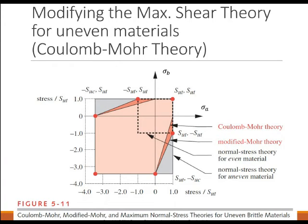Taking the maximum shear theory and the maximum normal theory and combining them is what Coulomb and Mohr did — it's called the Coulomb-Mohr theory, which was then further modified to give us the modified Mohr theory. The diagram shows sigma A and sigma B axes. We have the ultimate tensile strength tested at one point, the ultimate compressive strength at another, and the same points reflected on the sigma B axis. The next slide will show a zoomed-in portion of quadrants 1 and 4.